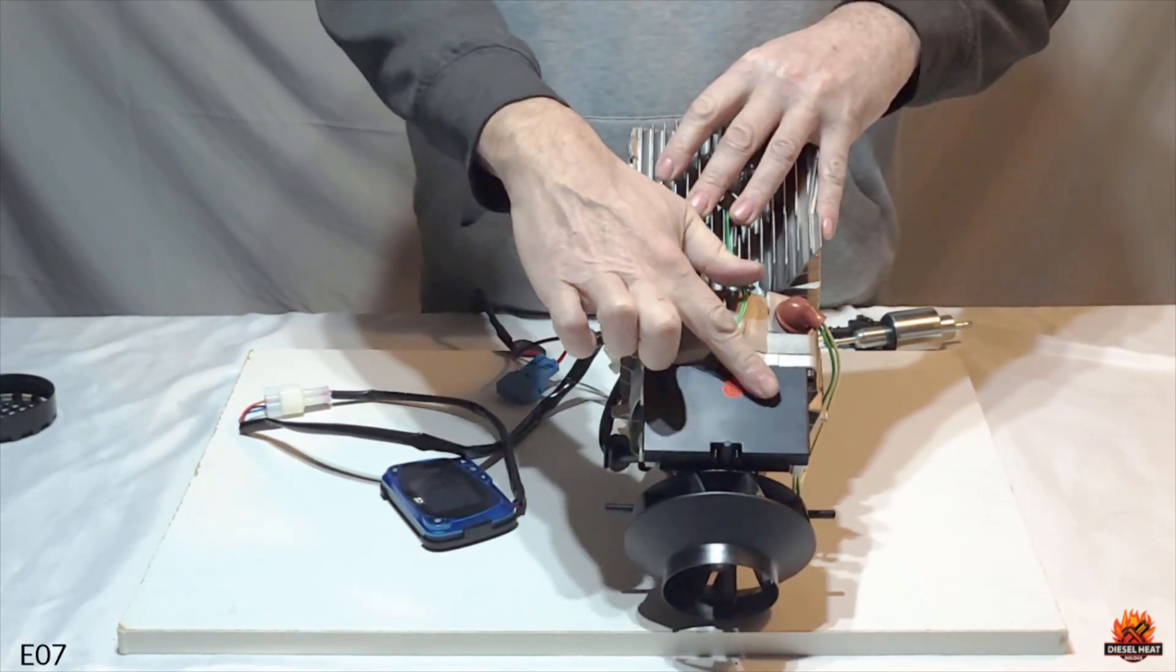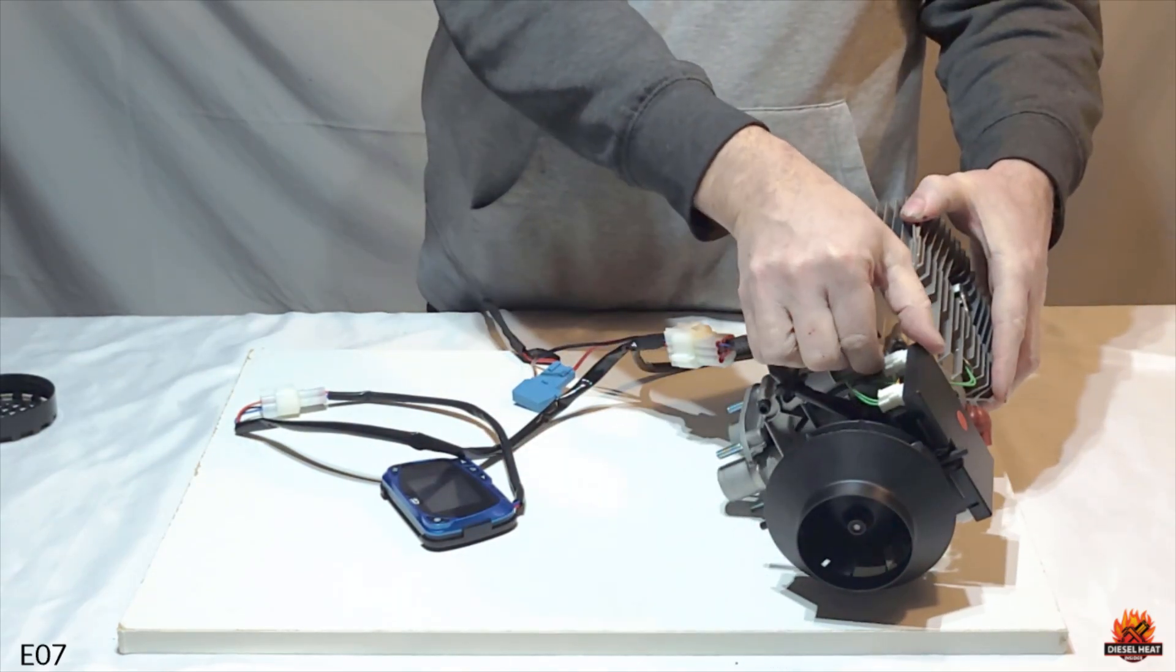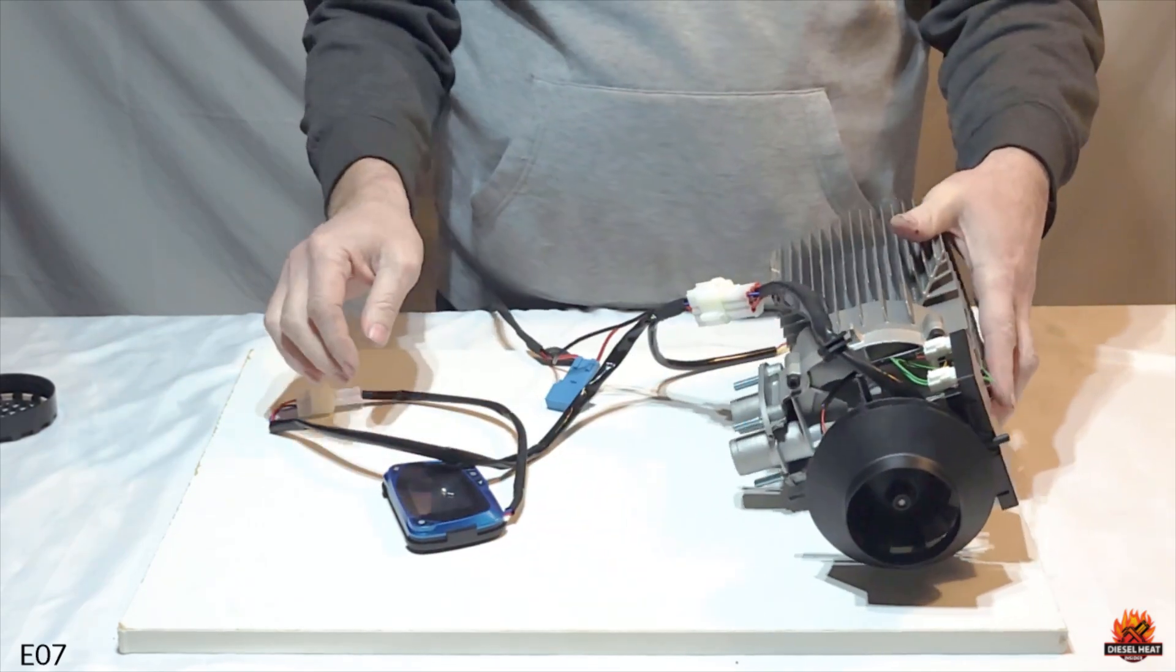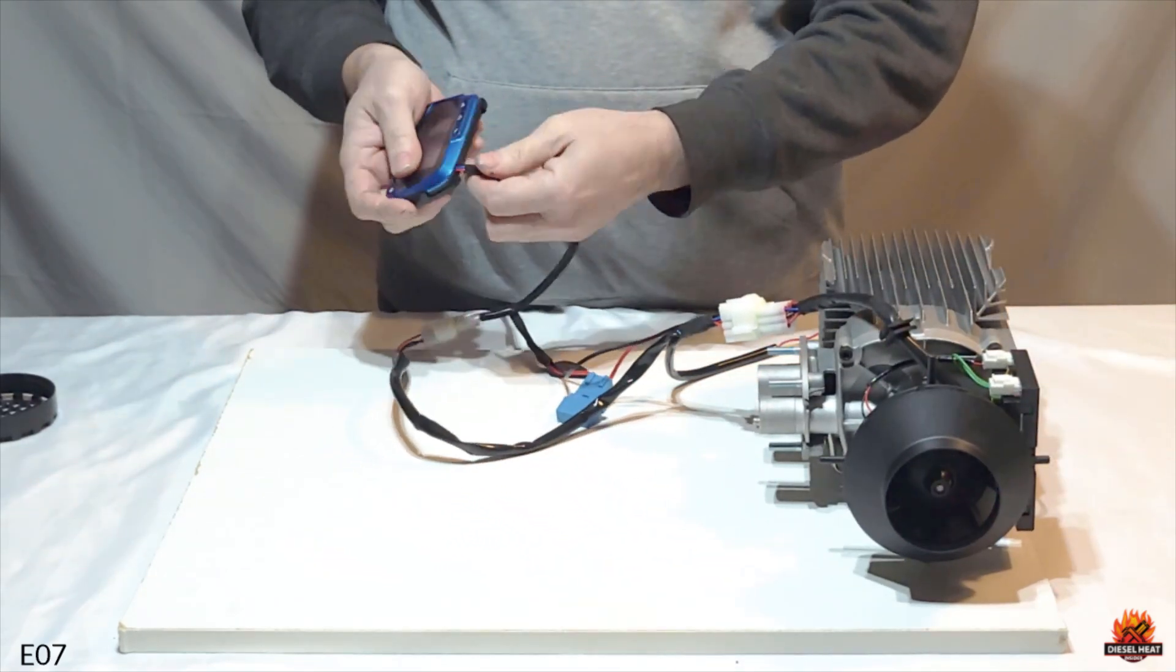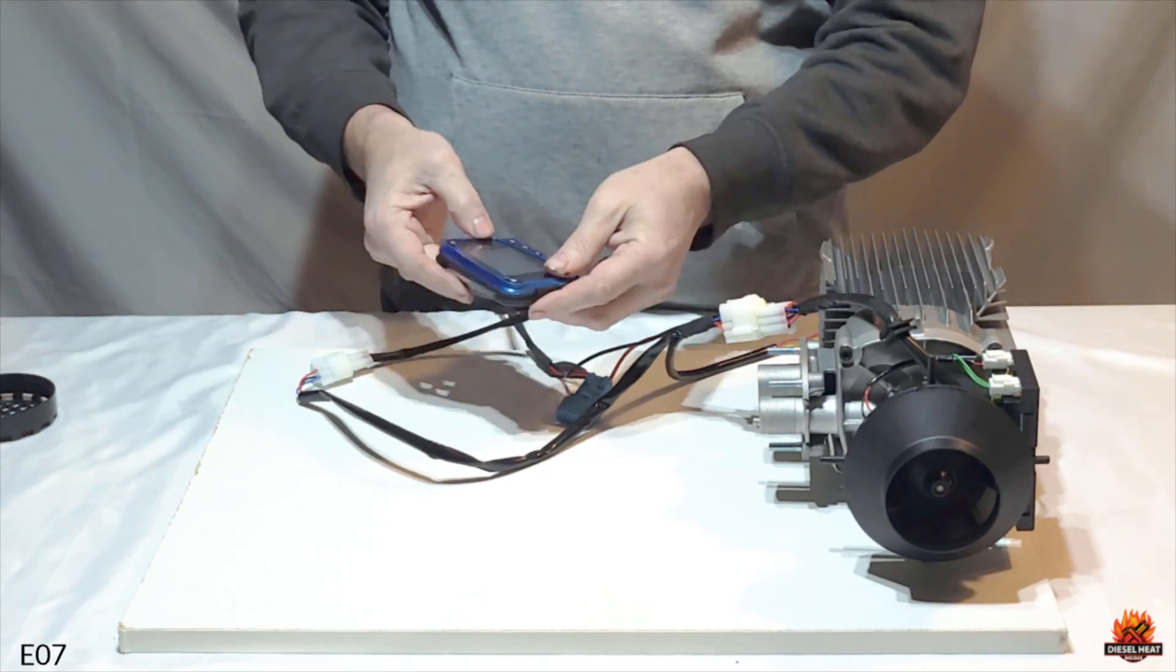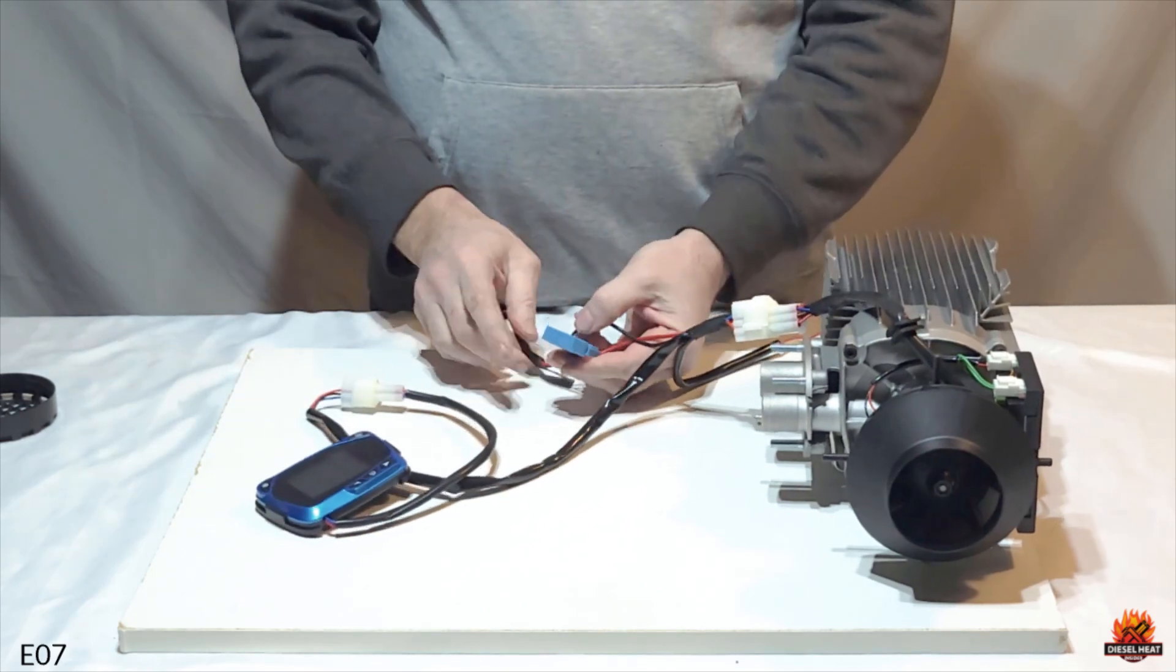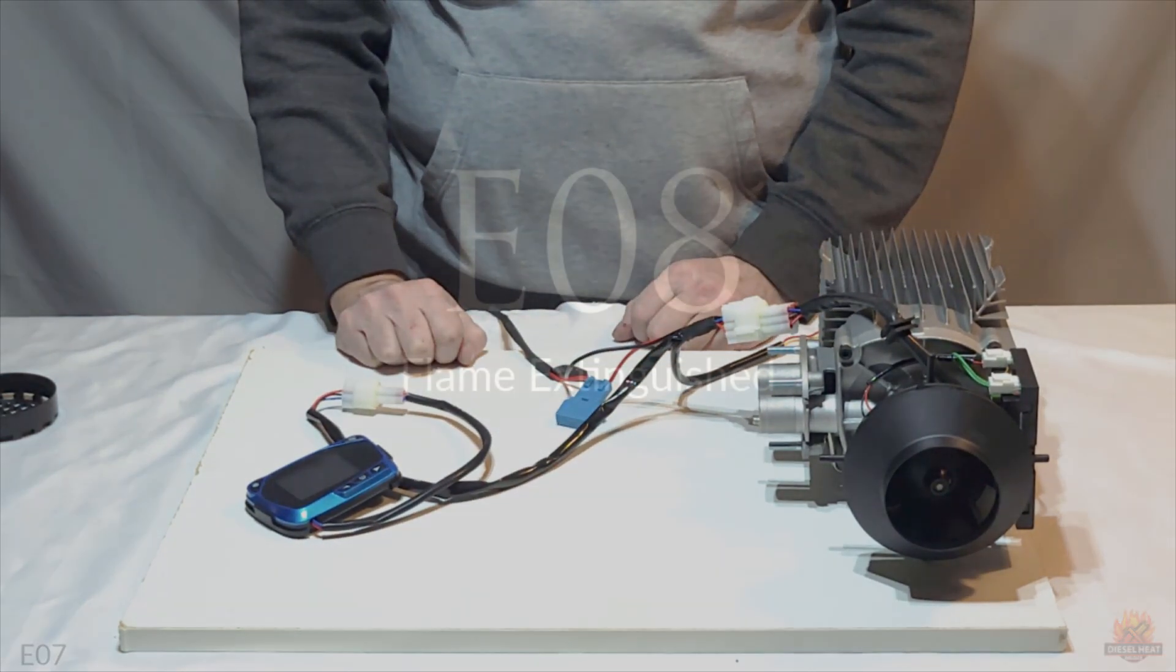The second reason could be that the controller board doesn't match the internal board within the unit. The third reason could be the controller's circuit board. Carefully take the controller apart to examine the circuit board, look for signs of condensation damage or cracks on the controller's circuit board.